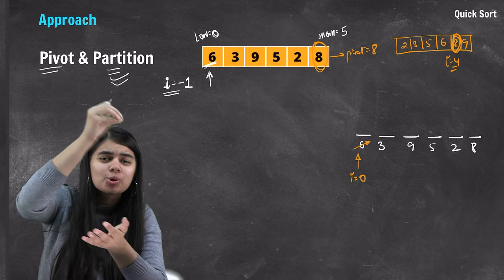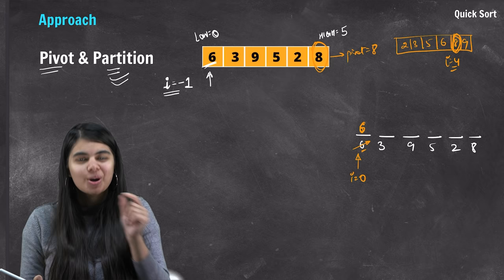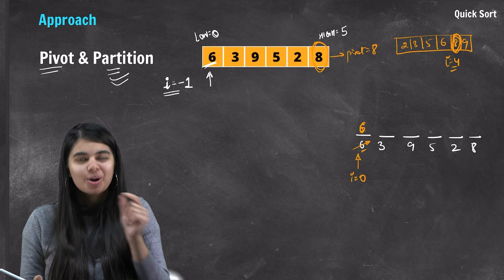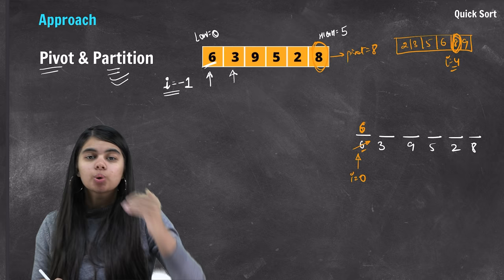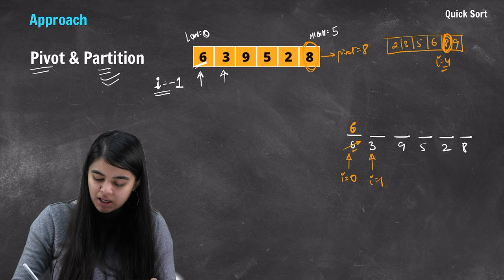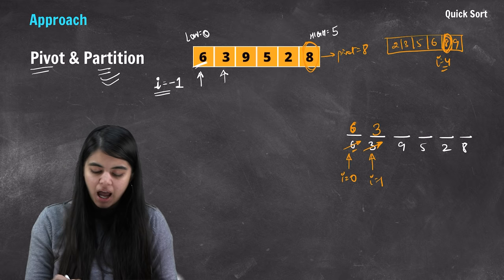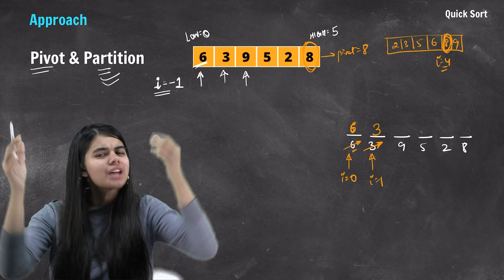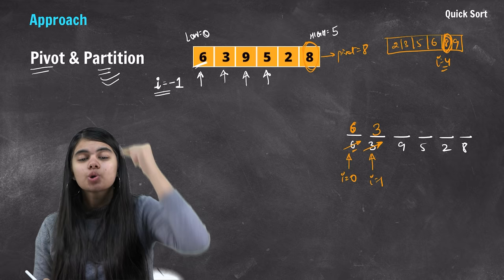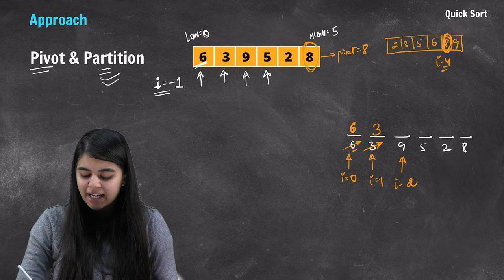So 6 gets placed in its position. We move to the next element: 3. 3 is compared with pivot 8 — 3 is smaller, so i increments again, making it 1. 3 takes its place. Next is 9. 9 is bigger than pivot 8, so no swap is needed. Next is 5 — 5 is smaller than 8. So i increments again, becoming 2. Then swap: 9 and 5 are swapped, and 5 goes to position i.